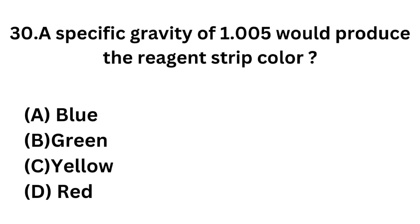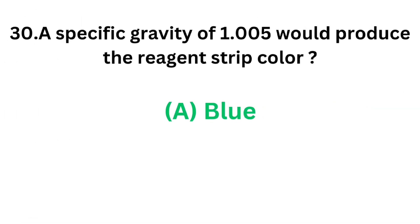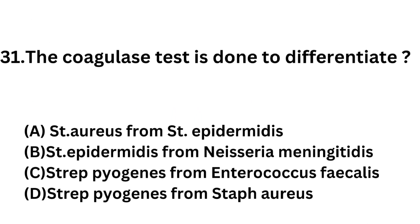Question number 30: A specific gravity of 1.005 would produce the reagent strip color — Option A: Blue. Option B: Green. Option C: Yellow. Option D: Red. The correct answer is Option A, blue. A specific gravity of 1.005 means the strip will be blue in color.